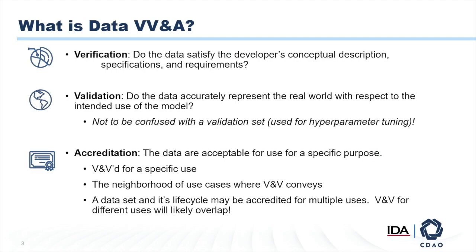This is something that DOD cares about. Part of my job today is going to be to convince you that this policy is also applicable to data for AI models. Some of you may disagree with that, and that's okay. I will talk about some reasons why there may be some differences there. But the first thing I want to talk about is, as worded, what does the policy tell us? Why is that important? Why do we care about data VV&A? And then some practical considerations for VV&A of data associated with AI models specifically.